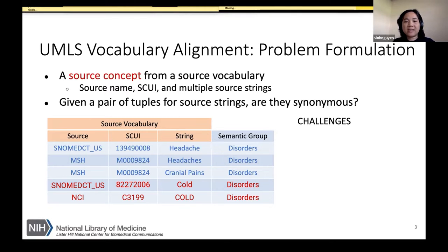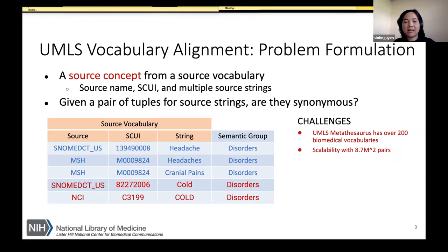There are a few challenges we face in this task. The first is the large number of vocabularies, which introduces a scalability problem for the full-scale UVA problem — we have about 8.7 million source pairs. Another challenge is domain diversity: the terms from source vocabularies span all biomedical domains included in the UMLS.